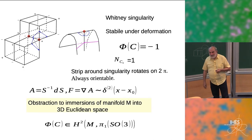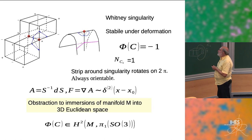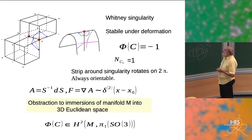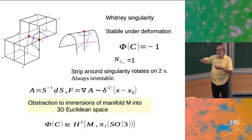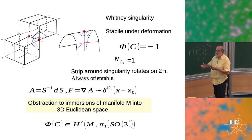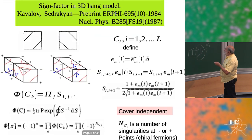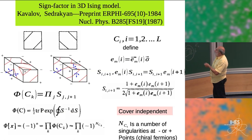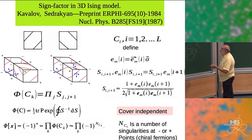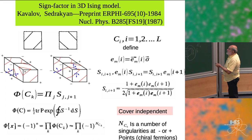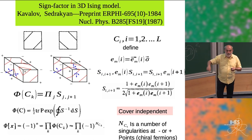To see this, you can even make an experiment: take a strip around a curve and you will see that going around this point, you come back having turned twice. The object I wrote — this product of S matrices — can be denoted as trace of the exponential of the integral of S⁻¹ dS. Then you will have a minus sign each time there is a singularity in the middle.